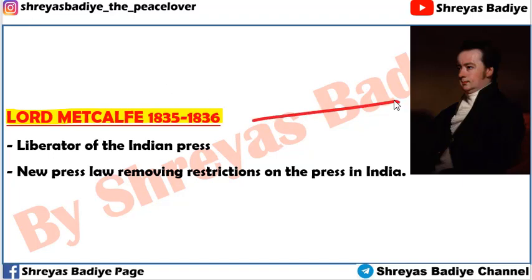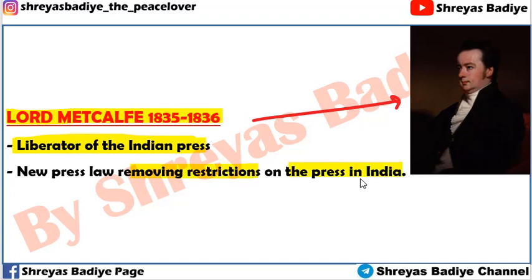After Lord William Bentick, there was an acting Governor of India, Lord Metcalfe, from 1835 to 1836. The main event during his time was the liberation of the Indian press — all restrictions on the British East India Company press were removed. That is why he is also called the liberator of the Indian press.